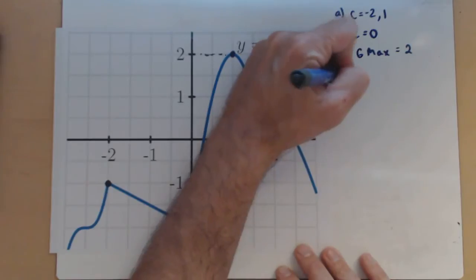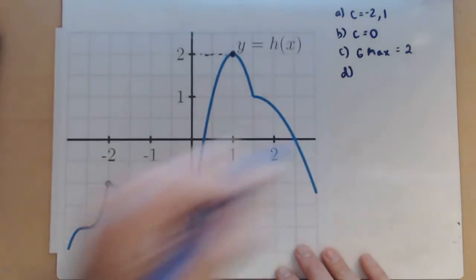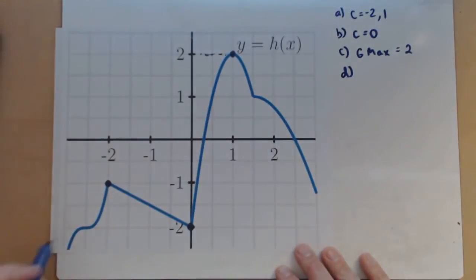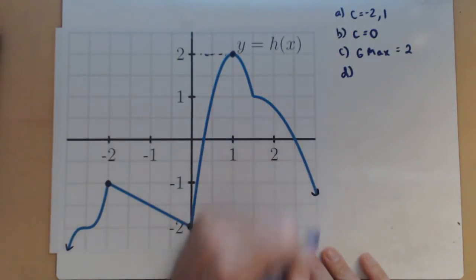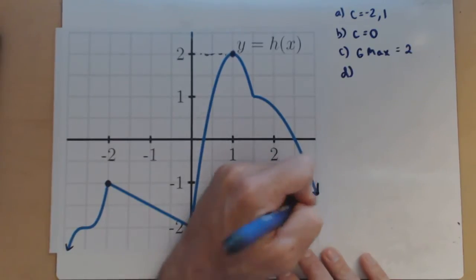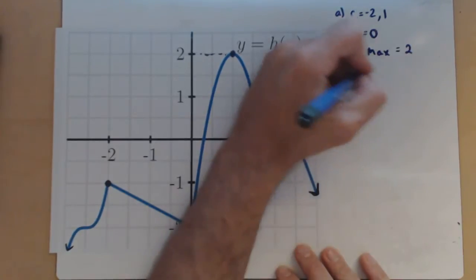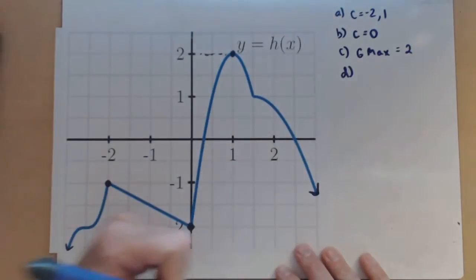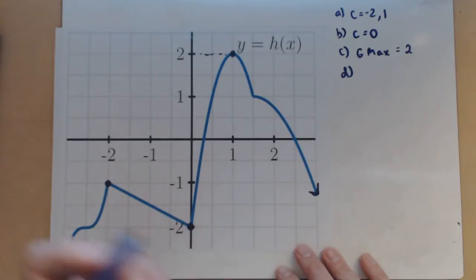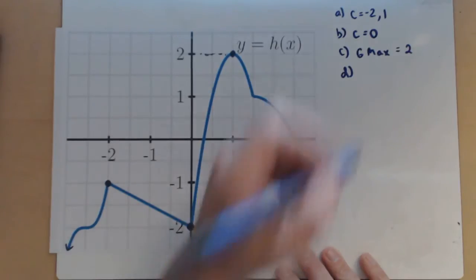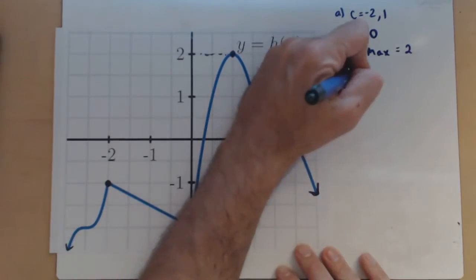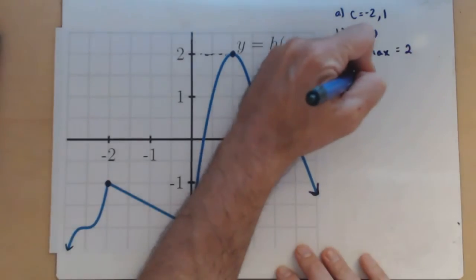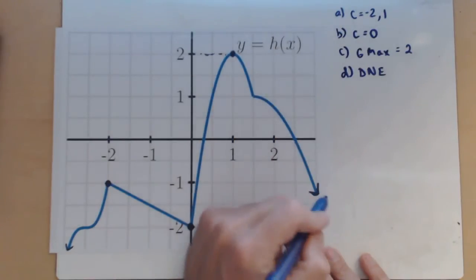Now, d asks for a global minimum. Notice here, our function just keeps going down at both ends. So there is no global min because it's going to go down to negative infinity, as far as we can tell. So we would say the global min does not exist.